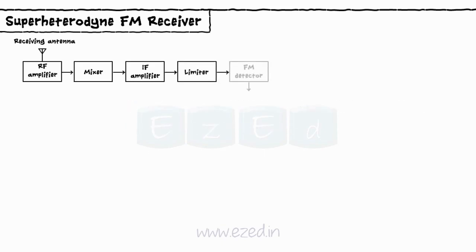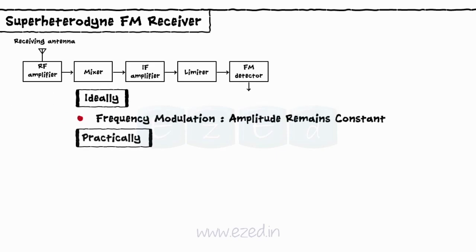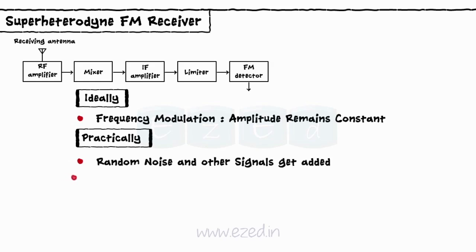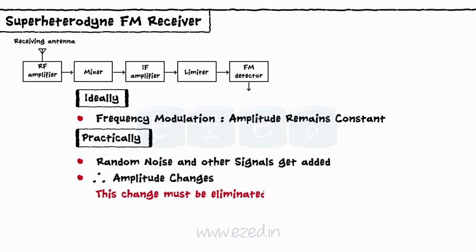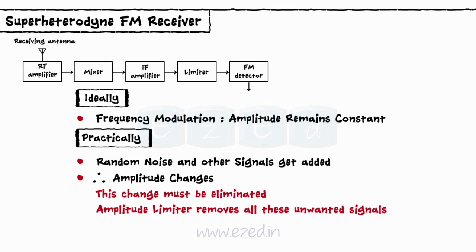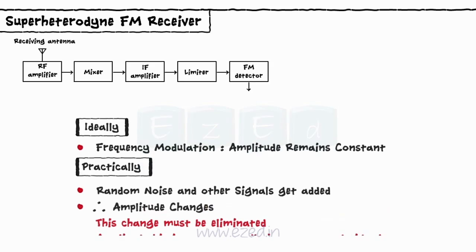Amplitude limiter stage: In FM, the amplitude of the modulated wave remains constant ideally. But practically, when the wave is transmitted, random noise and other unwanted signals get added to the modulated signal and its amplitude changes. These amplitude changes must be eliminated before the signal goes for demodulation. The amplitude limiter removes all these unwanted signals and is always placed before the FM detector.